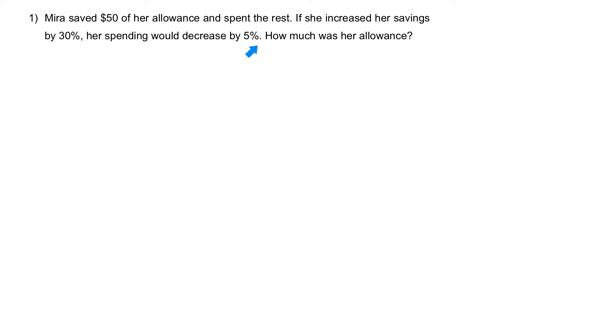Step one: Let's change all the percentages to fractions. Three out of ten for 30%, and one out of twenty for 5%.